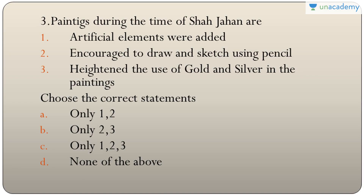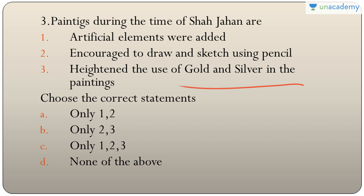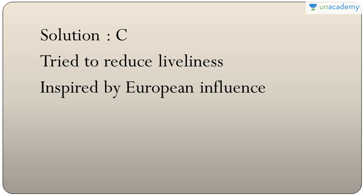Question three: paintings during Shah Jahan's time — artificial elements were added, use of pencil for drawing and sketching was encouraged, and gold and silver were used extensively. All three are correct, so the answer is C — only one, two, and three. He also wanted to reduce liveliness in paintings and was influenced by European paintings.